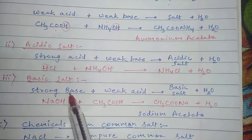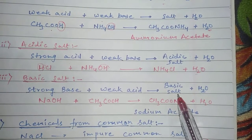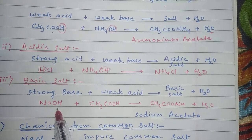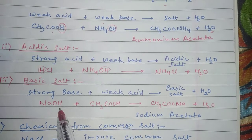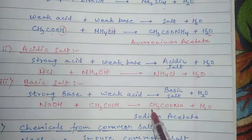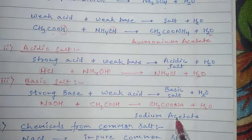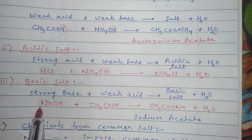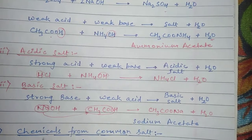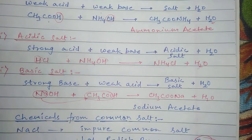Now we will discuss basic salt — it is the vice versa. When a strong base reacts with a weak acid, it forms a basic salt. For example, the strong base is NaOH and the weak acid is acetic acid. They form sodium acetate and water. The sodium combines with the acetate part of the acid to form sodium acetate.